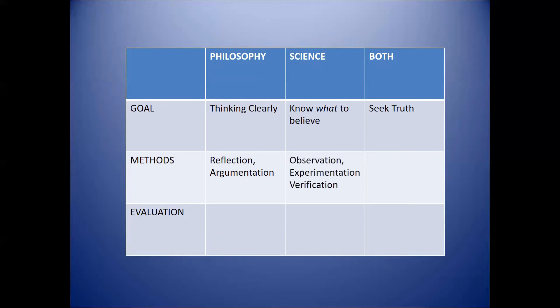We need not go into great detail here regarding the methods of science. I'm assuming you're somewhat familiar with those. They include observation, experimentation, and verification. Once the experiment succeeds in science, you want to be able to verify it through repetition and have other people do similar experimentation with the same results, the same observations.